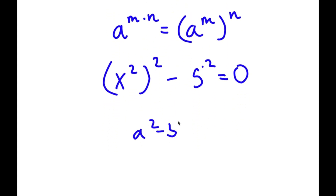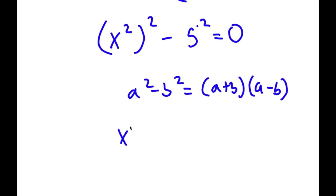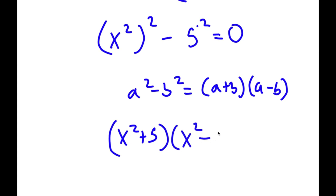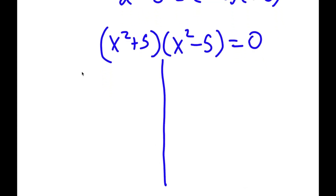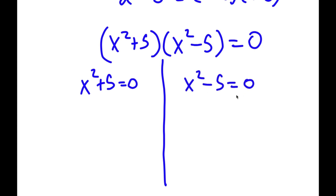If I have something in the form a squared minus b squared, this equals a plus b times a minus b. So in this case, this becomes x squared plus 5 times x squared minus 5 equals 0, giving me two equations: x squared plus 5 is equal to 0, and x squared minus 5 is equal to 0.